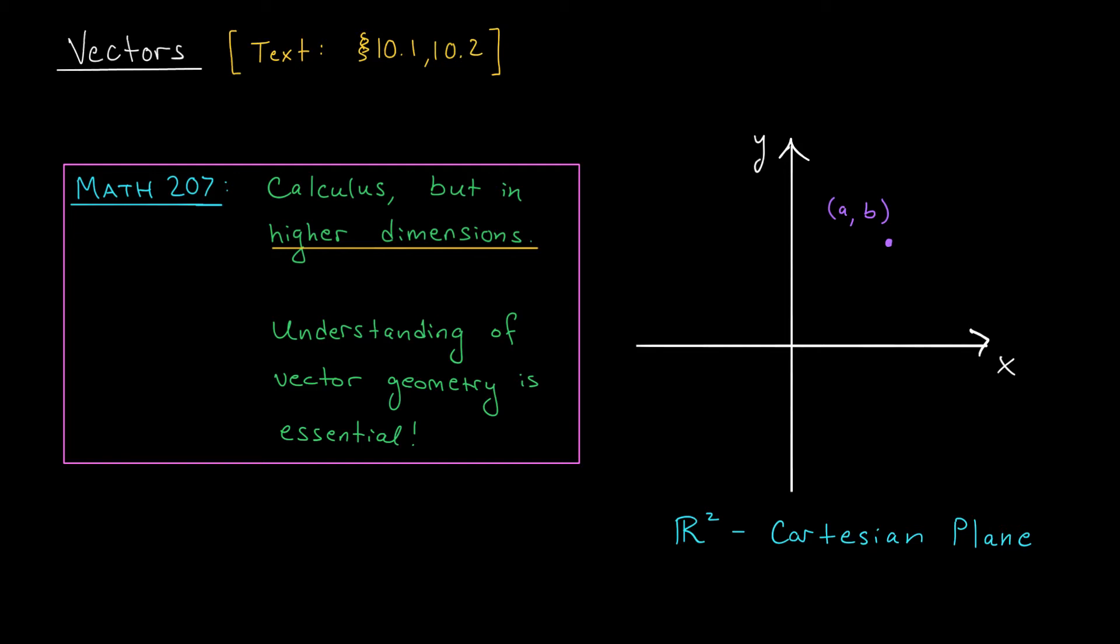Hi everyone, and welcome to your first video lesson for Math 207. Now as I mentioned in the course introduction, this course is all about calculus but in higher dimensions. Mostly we're going to be working in two or three dimensions, but sometimes in general we'll be working in n dimensions. Now where have you seen those ideas before? Probably in your linear algebra course. There you talked about vector geometry and the geometry of higher dimensional spaces, and that kind of knowledge is going to be essential moving forward in our course.